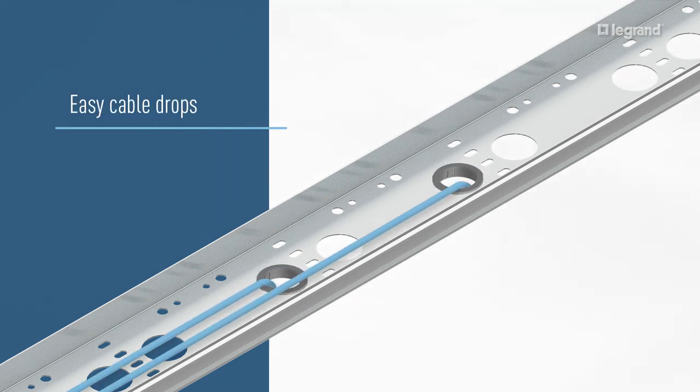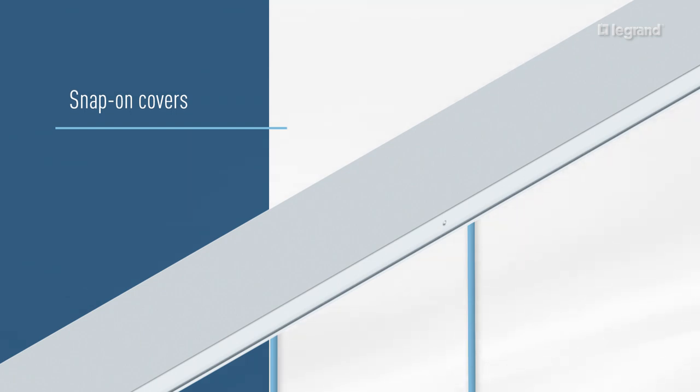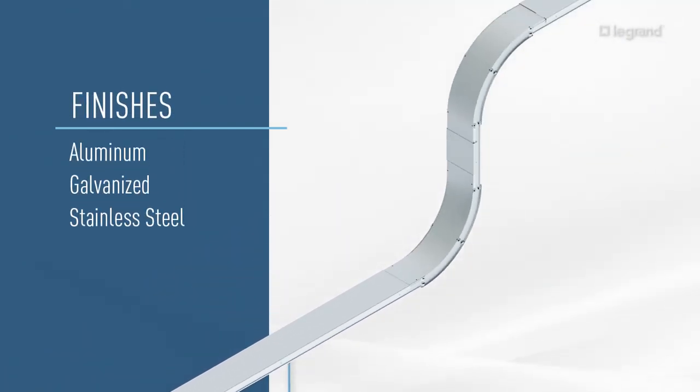Cables can be easily added to the open system and dropped anywhere without cutting tray and holes to allow cable ties. Top finish covers that snap in place with aluminum, galvanized, and stainless steel finishes to choose from.